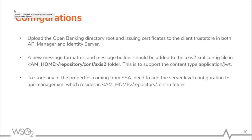Configurations have to be done to use the WSO2 Open Banking Dynamic Client Registration endpoint. The first configuration is that the user has to upload the Open Banking directory root and issuing certificates to the client truststore in both API Manager and Identity Server. Then a new message formatter and a message builder should be added to the axis2.xml config file in the API Manager Home repository conf axis2 folder. This is to support the content type of application/JWT.